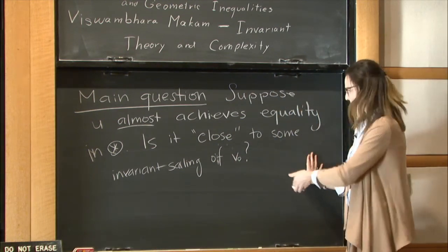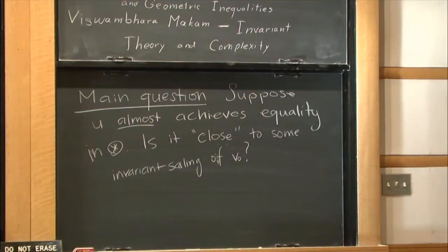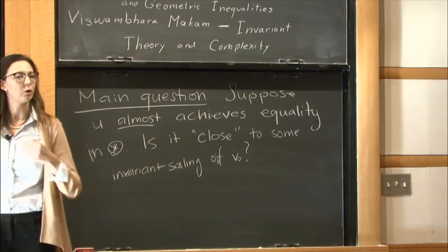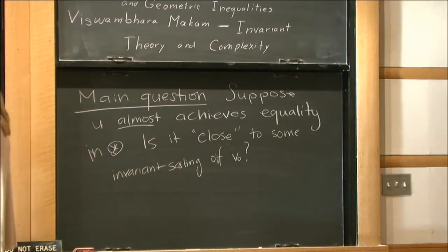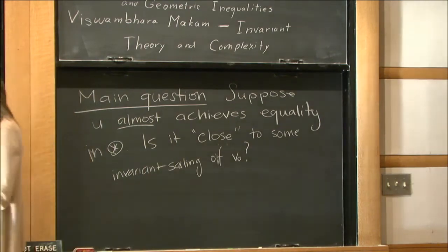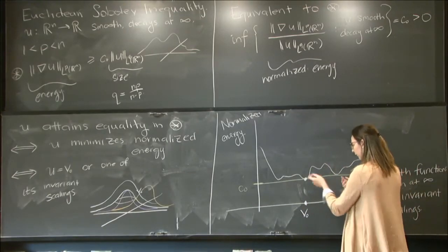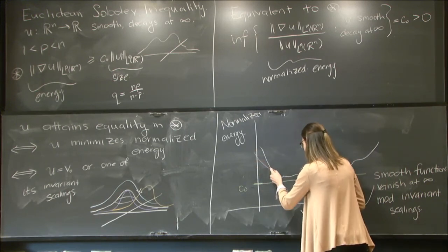That's to say, is it close to one of these equality cases? So the answer here is yes. But let me go ahead and draw sort of what this kind of question means in terms of the schematic drawing. Essentially, this establishes some sort of quantitative modulus of convexity, some way that this energy must separate from the global minimum.